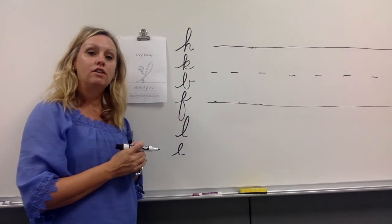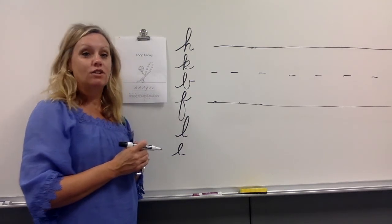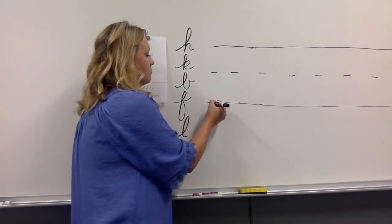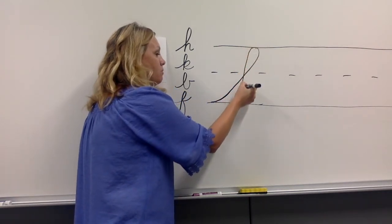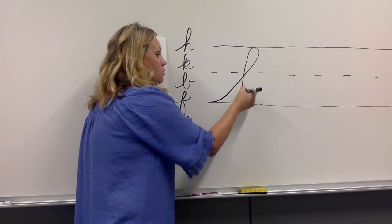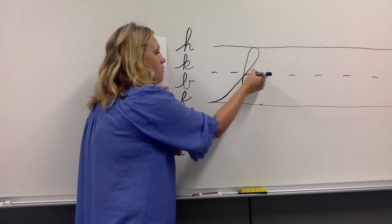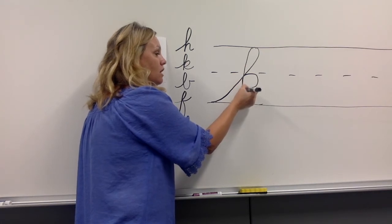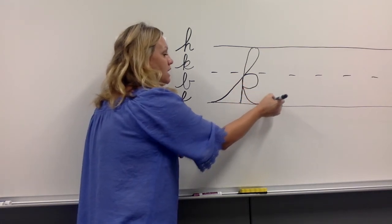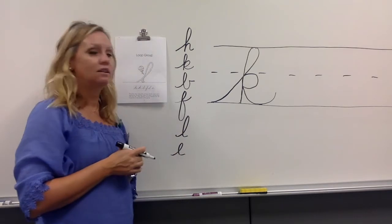The next lowercase letter in the loop group is K. Start at the bottom writing line. Kite string up all the way to the top, backwards loop, pull down straight, retrace on the same line halfway up, do a circle, touch in the middle, kick it out at a slant, and release. There's your K.